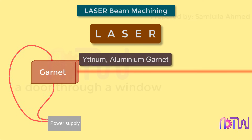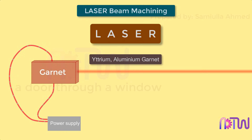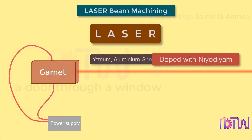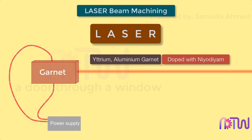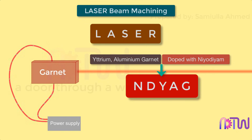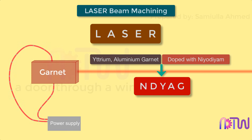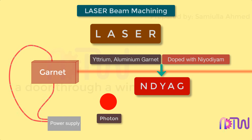Yttrium aluminium garnets doped with neodymium, also called Nd:YAG, are most popularly used. These excited electrons emit photons — photons are the particles of light — and these emitted photons form a concentrated beam of light, forming a laser.